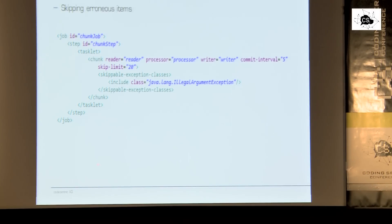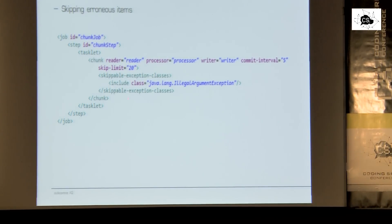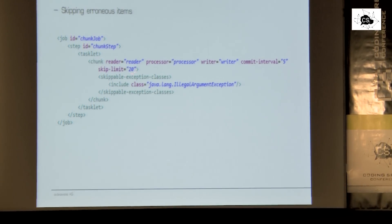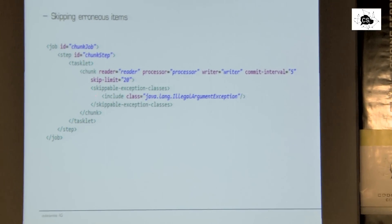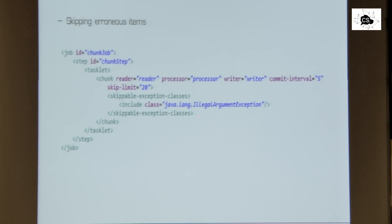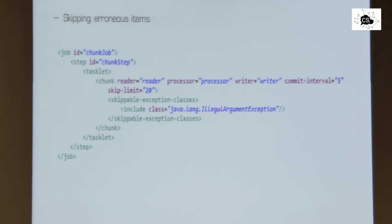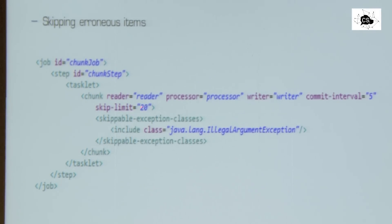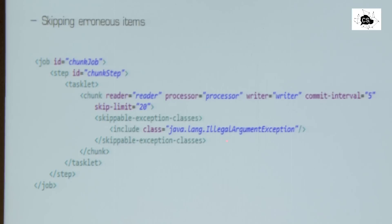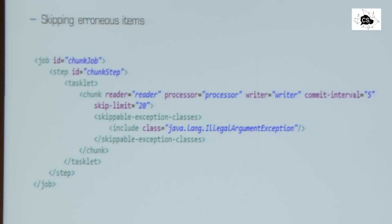The skipping ability is configured like this — we can include skippable exception classes. If an illegal argument exception occurs in one of those components, the error would be skipped, the item would be skipped, and the job would continue. We can also specify a skip limit — so if the maximum of skipped items reaches 20, the job fails anyway.